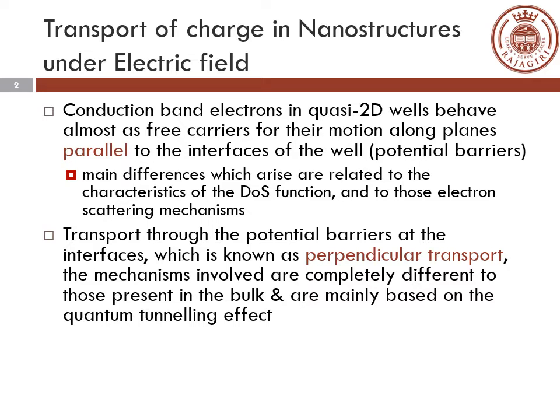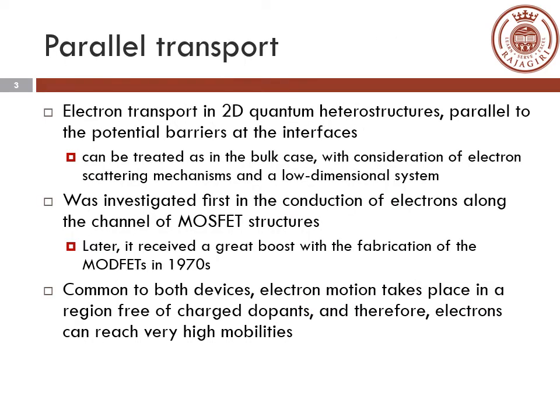The transport through the potential barriers at the interface, which is otherwise known as perpendicular transport, is entirely different from bulk semiconductors. In 2D semiconductors, it is mainly based on the quantum tunneling effect. Parallel transport is the flow of electrons parallel to the potential barriers at the interface. It is similar to 3D semiconductors, but here we need to consider electron scattering mechanisms as well as low dimensional concentrations.